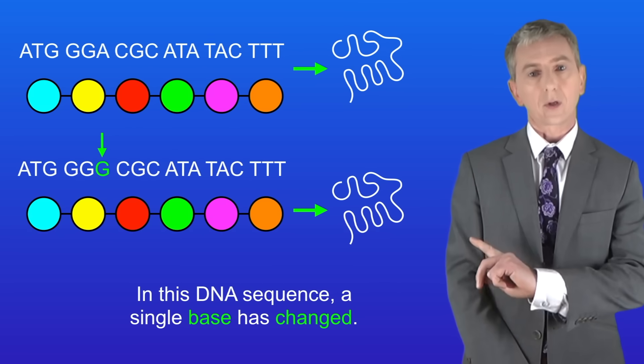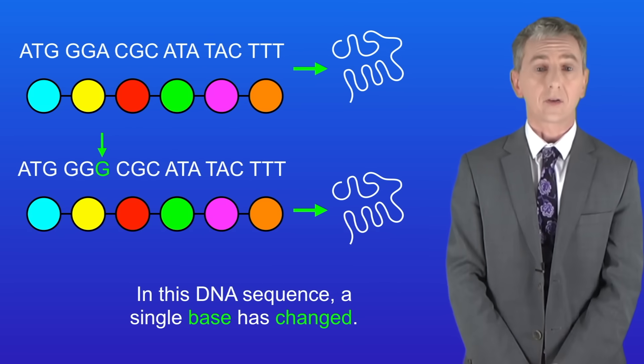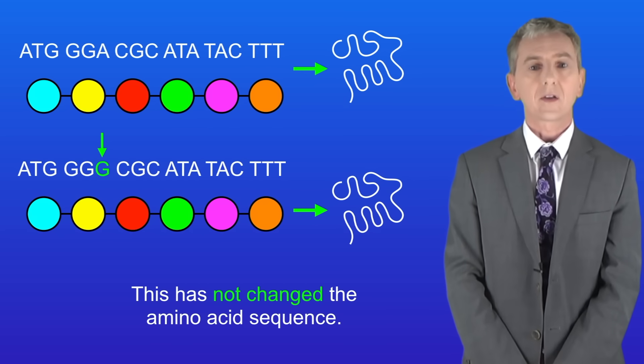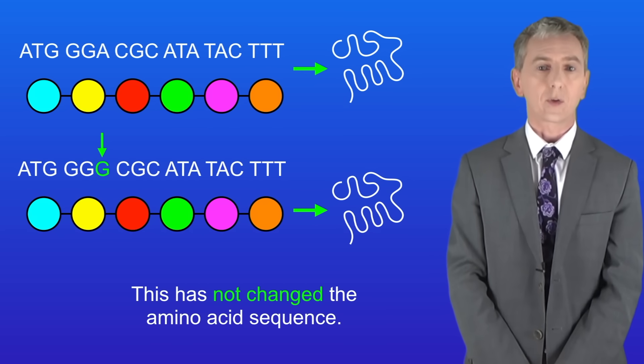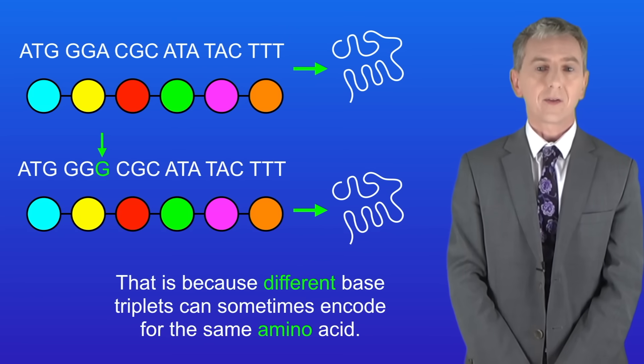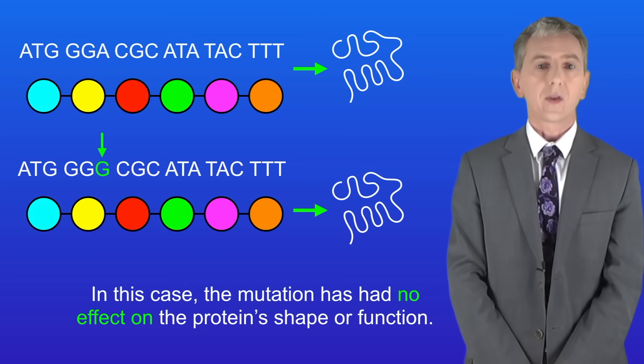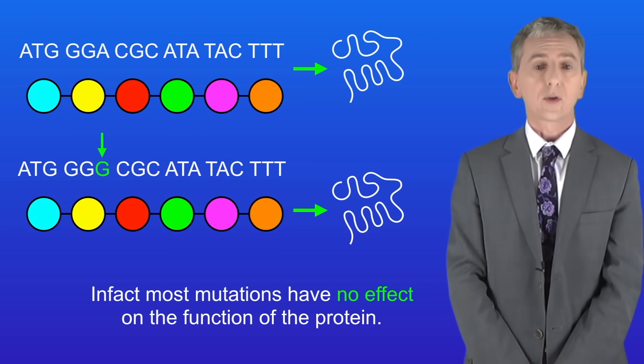In this DNA sequence a single base has changed—in other words, a mutation has occurred. However, as you can see, this has not changed the amino acid sequence. That's because different base triplets can sometimes encode for the same amino acid. So in this case the mutation has had no effect on the protein's shape or function. In fact, most mutations have no effect on the function of the protein.